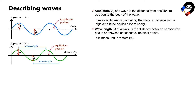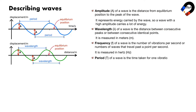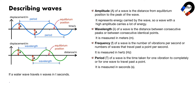Wavelength is measured in meters. The frequency f of a wave is the number of vibrations per second, or the number of waves that travel past a point per second, measured in hertz (Hz). The period T of a wave is the time taken for one complete vibration, or for one wave to travel past a point, measured in seconds. If a water wave travels n waves in t seconds, its frequency is n divided by t, and its period is t divided by n.